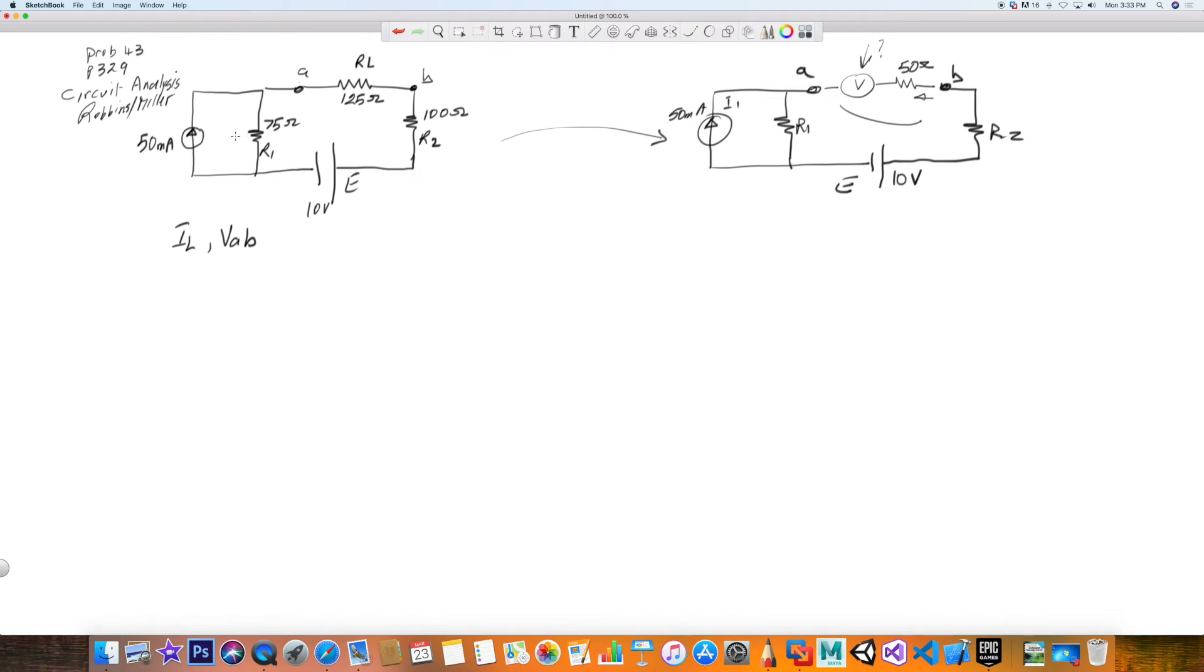Now, the approach to this - you could use Thevenin, Norton, whatever you're comfortable with. I'm just going to do current nodes. So I'm going to call this one I1 and I'm going to call this one I2, assuming that my current is heading in this direction. If that's the case, against R1, then the voltage drop will be in this direction. Against here it will be in this direction, and this will be in this direction. Okay, so now we can write the current node vis-a-vis I2.